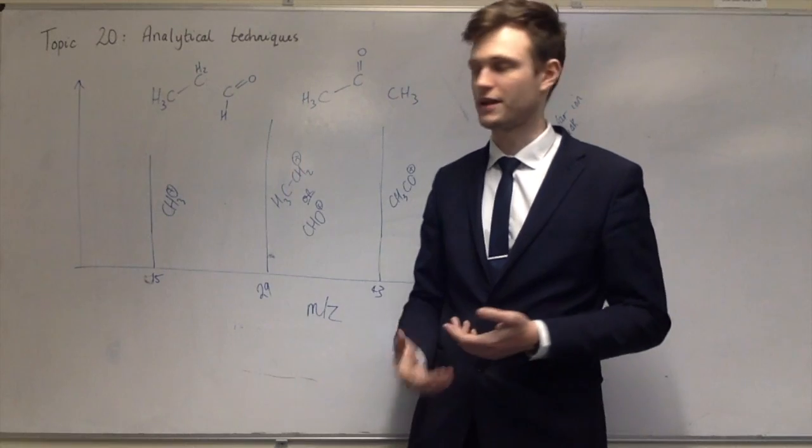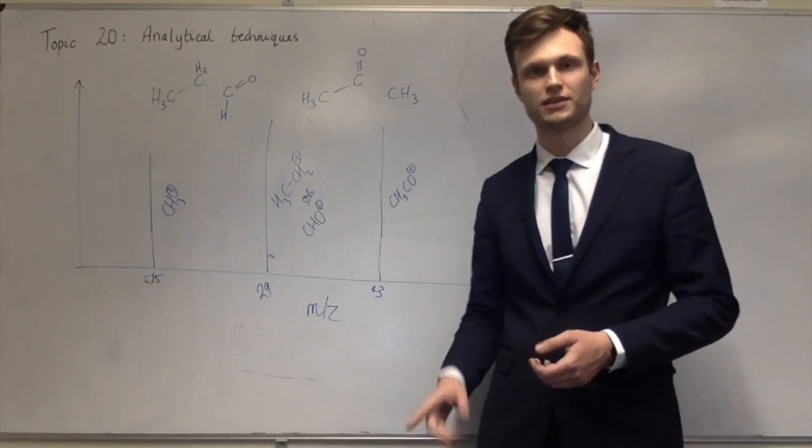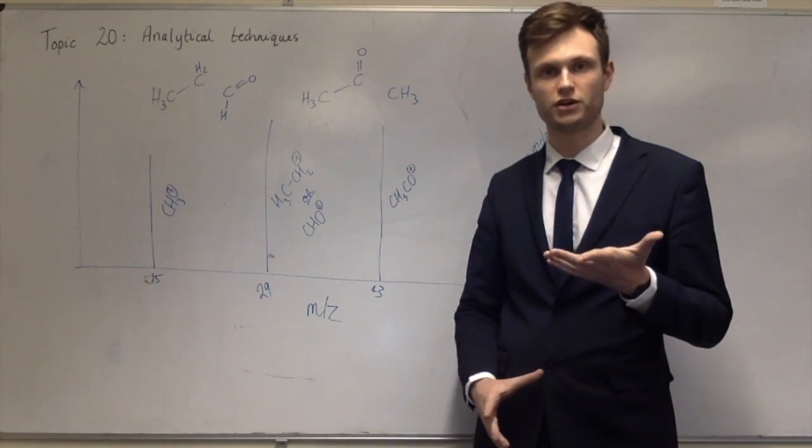So for instance, 15, the only way you can get that is with a carbon and three hydrogens. For the 29 peak, then there's two different ways of making that. Two carbons with five hydrogens,